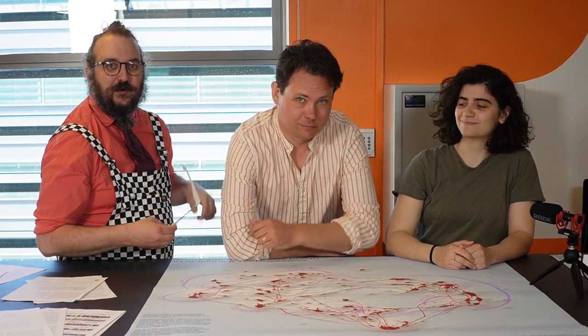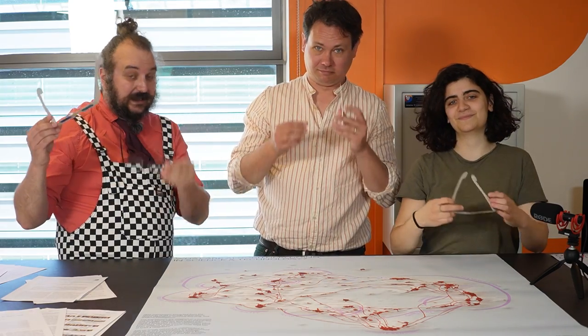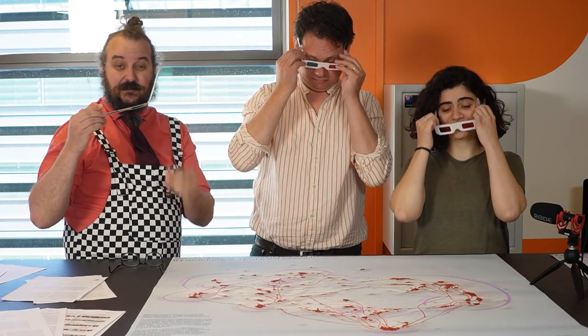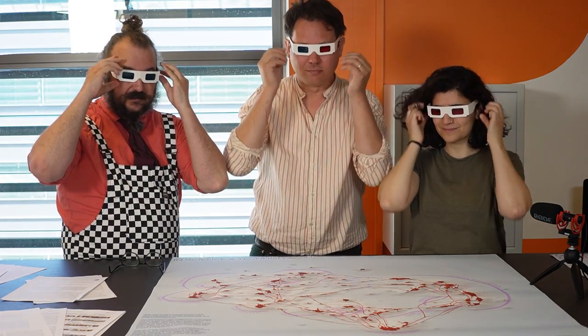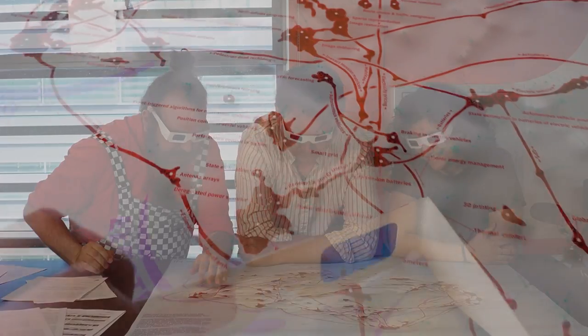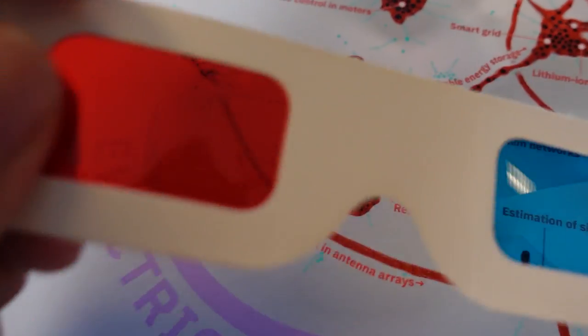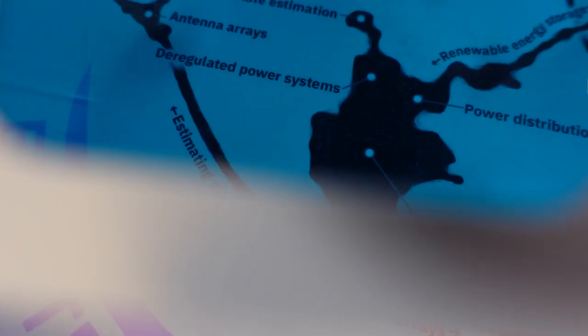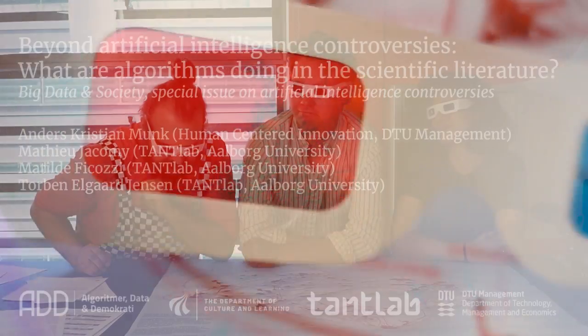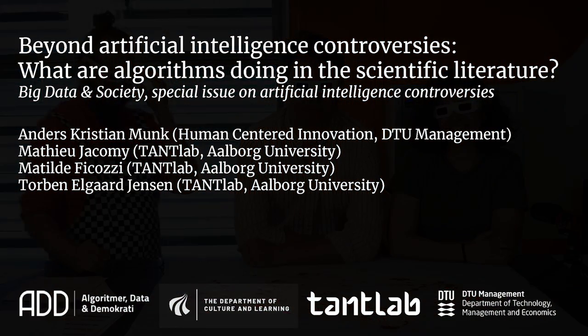Oh, and by the way — if you have a pair of 3D glasses at home, you can put them on and dive into the map to explore its different layers. You will be able to separate the initial words and underlying material from our annotations.